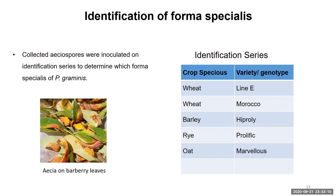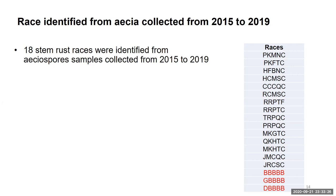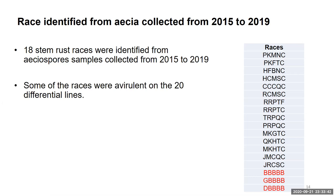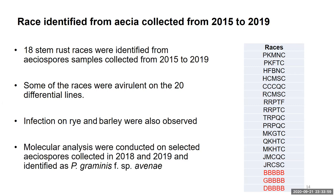These two races are unique and of low virulence, which is likely a result of infection coming from aecia spores. The collected aecia spores were inoculated on identification series to determine the forma specialis. The identification series are wheat, barley, rye, and oats. More than 18 stem rust races were identified from aecia spore samples collected from 2015 to 2019. This table indicates the aecia spore-derived stem rust races. Some races were avirulent on the 20 differential lines as indicated in red — the BBB races. Infection on rye and barley were also observed. Molecular analysis was conducted on selected aecia spores collected and identified as Puccinia graminis.